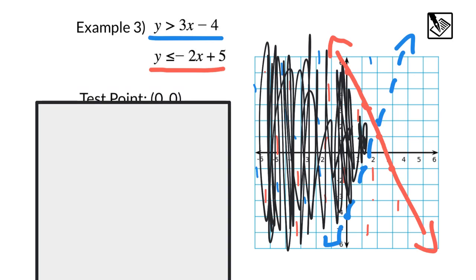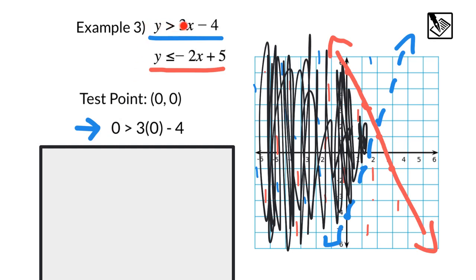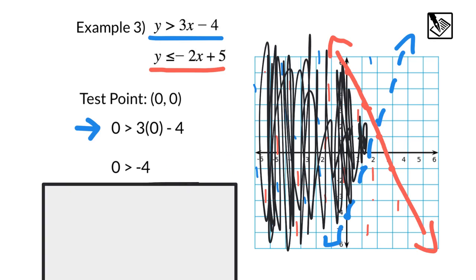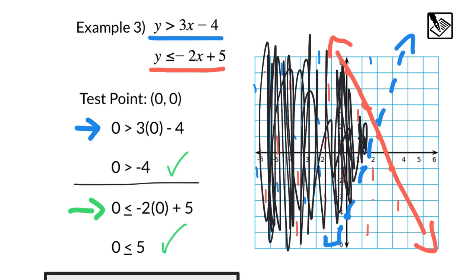Just to confirm our solution, let's try that old reliable test point of zero, zero. Zero, zero lies right in the region we'd expect. So we would expect this to make both of the inequalities true. Trying in the first one, we get zero is greater than 3 times zero minus 4. Evaluating that, we have zero is greater than negative 4. That is true. Trying in our second inequality, we have zero is less than or equal to negative 2 times zero plus 5. Evaluating that, we get zero is less than or equal to 5, and zero is indeed less than or equal to 5. So our test point confirms the region we shaded is accurate. All points in this region will solve this system of inequalities. All right. Hope this video was helpful.